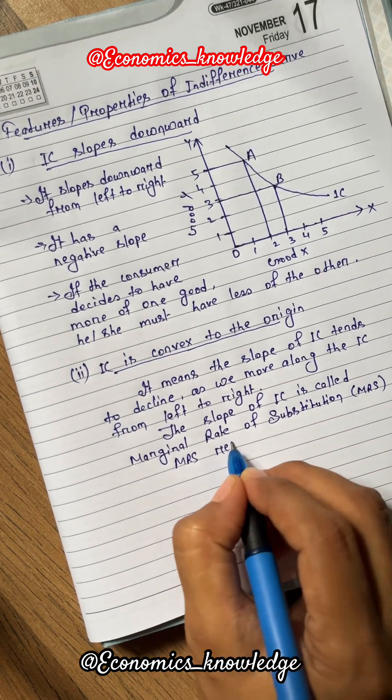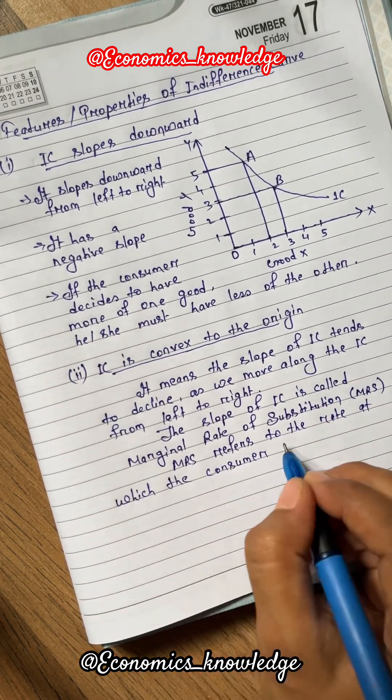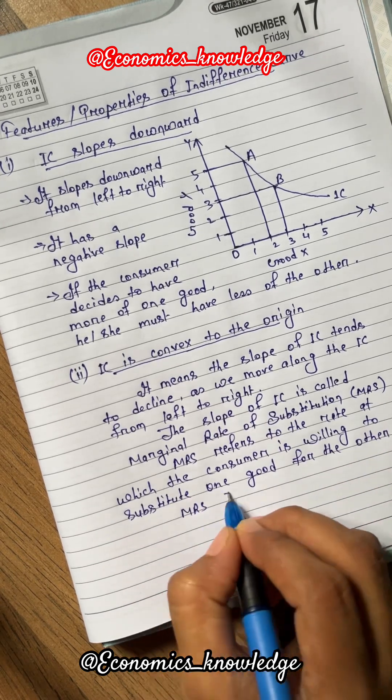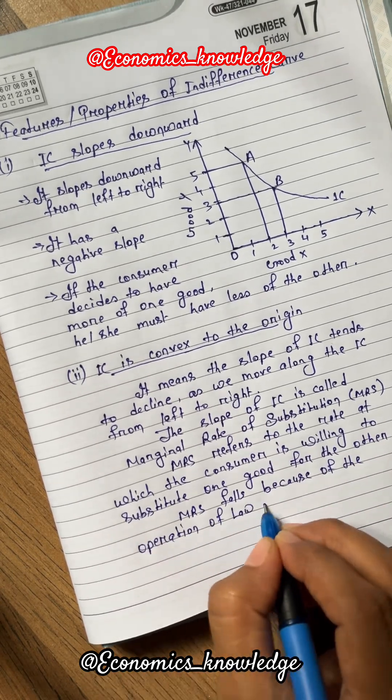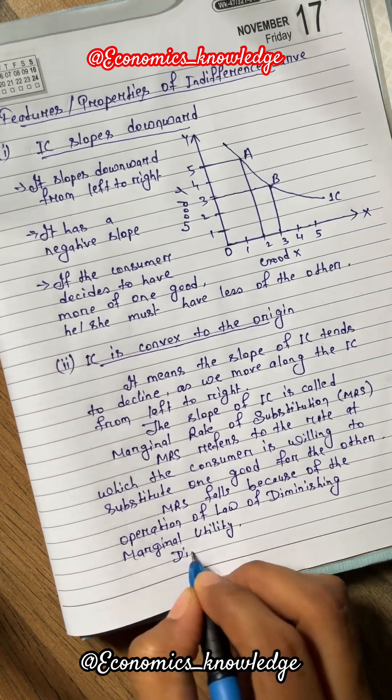What is marginal rate of substitution? Marginal rate of substitution refers to the rate at which the consumer is willing to substitute one good for the other. MRS falls because of the operation of law of diminishing marginal utility.